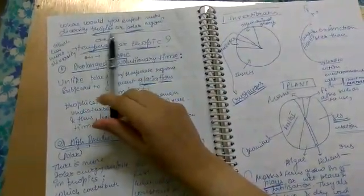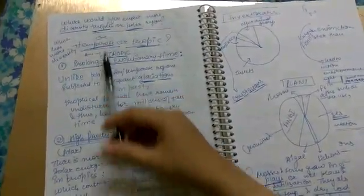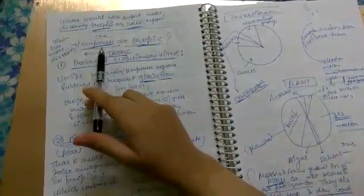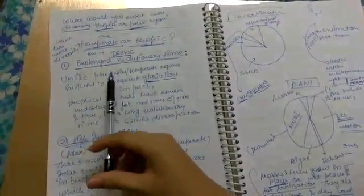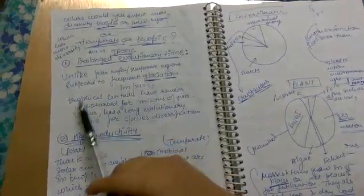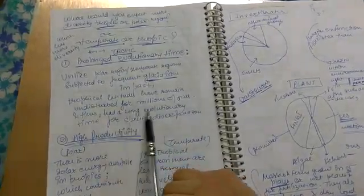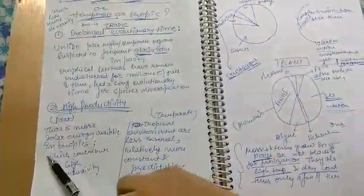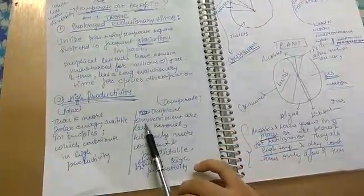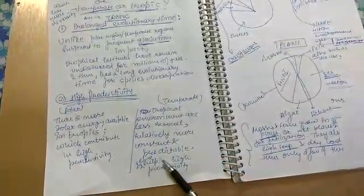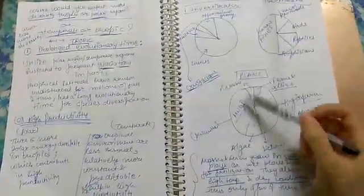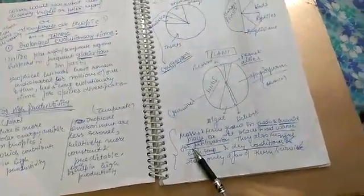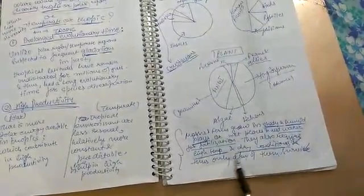Where would you expect more diversity, in tropical or polar region, or temperate or tropical region? Tropical latitudes receive more solar radiation, which contributes to high productivity. Tropical environments are less seasonal, relatively more constant and predictable, and hence help in high productivity. Then we have these figures. The NCERT mentions that in vertebrates or plants, mosses and ferns grow in shade and humid or wet places and need water for fertilization. They also require high temperature and dry conditions, and thus only few of them survive.